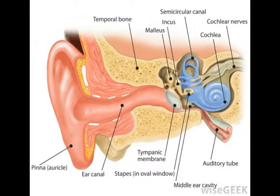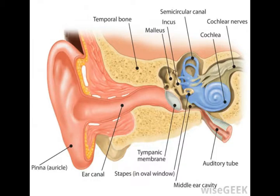The stapes is one of the three small bones called ossicles that are located in the middle ear. It plays an important role in how sound vibrations travel through the ear and are heard. It is found in human embryos very early in development and is also found in other species of animals. The function of this delicate bone can become compromised due to health issues and disease, but it can be repaired.